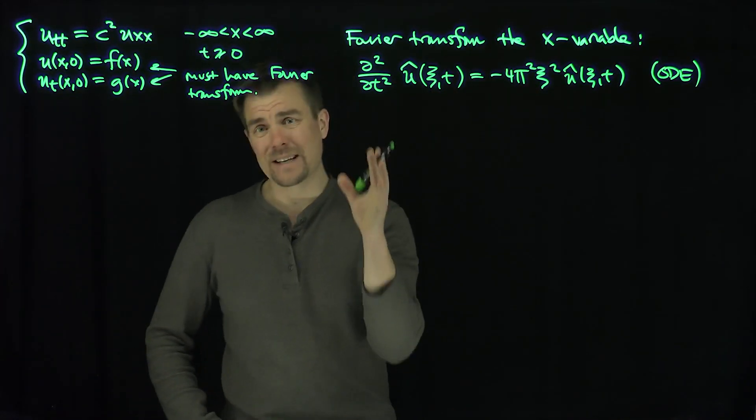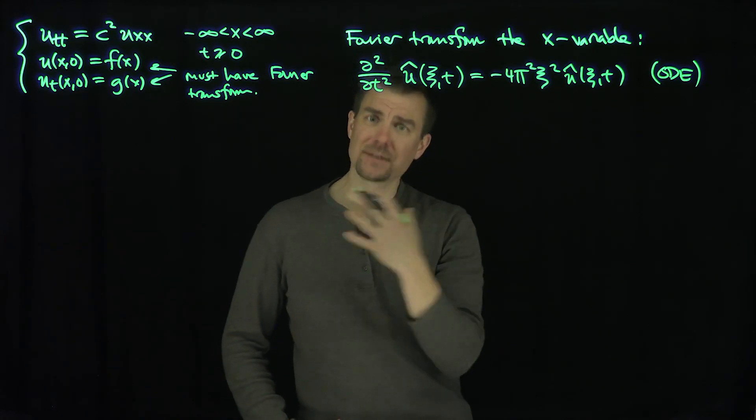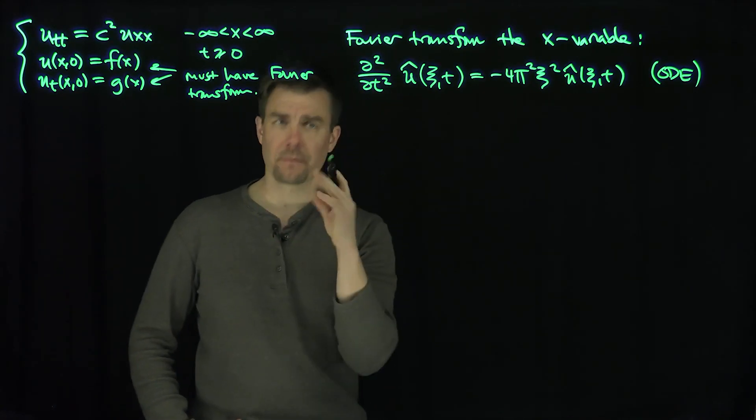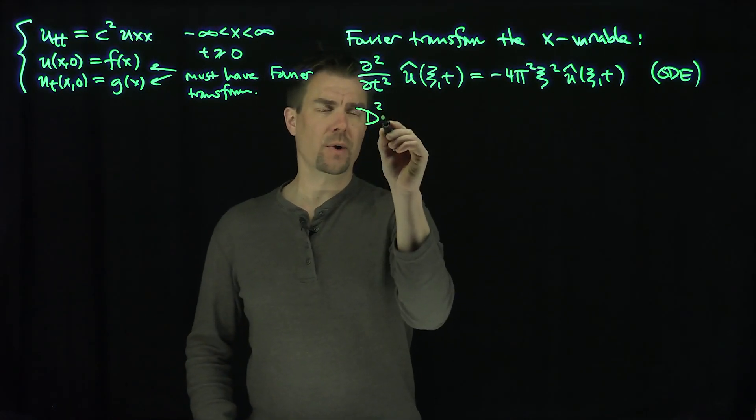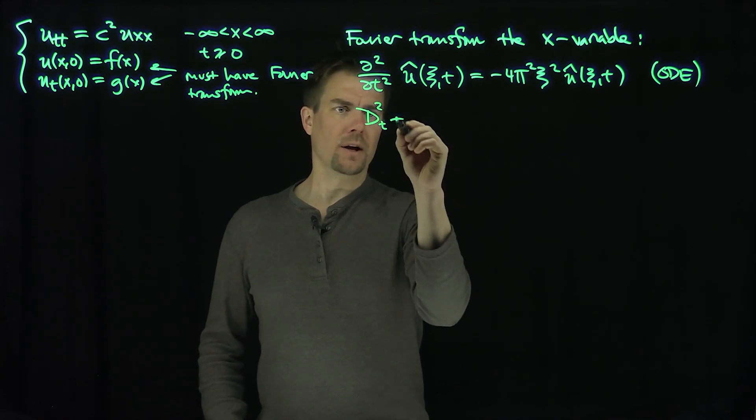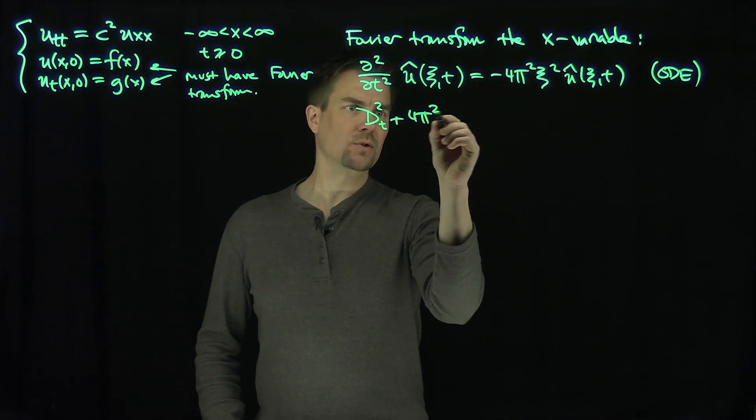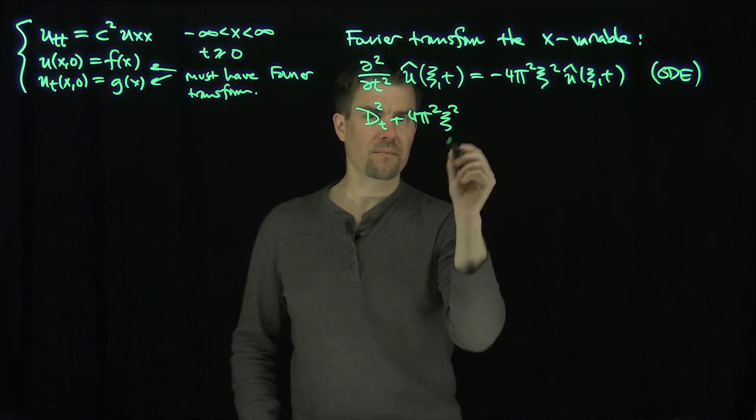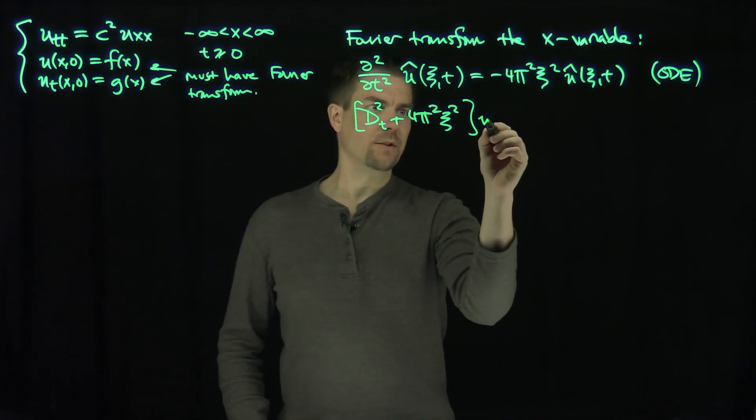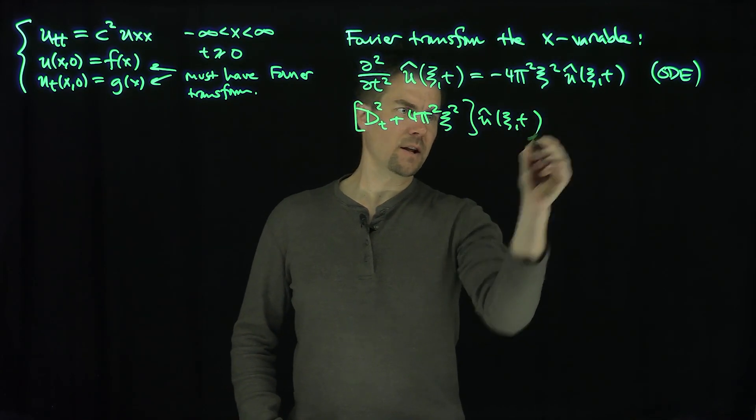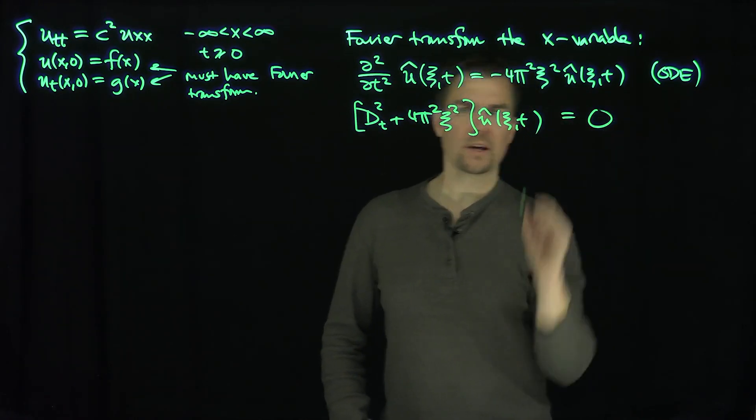And so now, and of course these are linear, so that will turn into a constant coefficient ODE with respect to one of the variables and frozen, basically. So this is d squared, with respect to time, plus 4 pi squared xc squared, this differential operator applied to U hat xc t is equal to zero, that's our ODE.